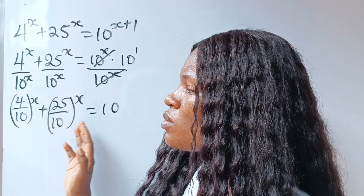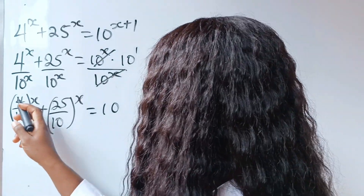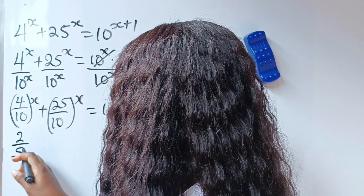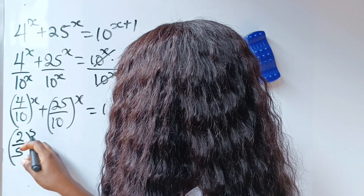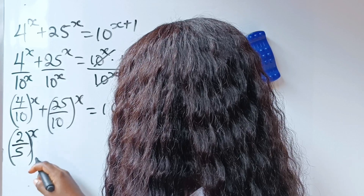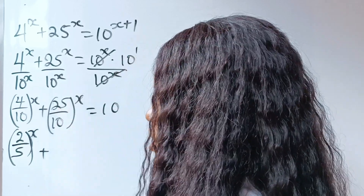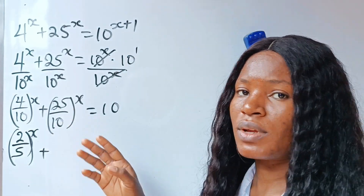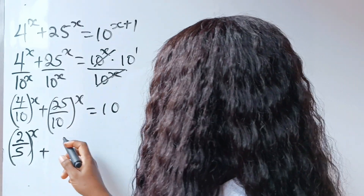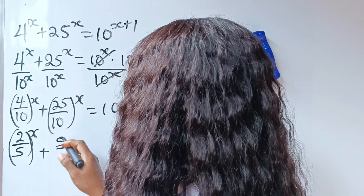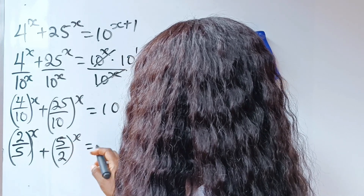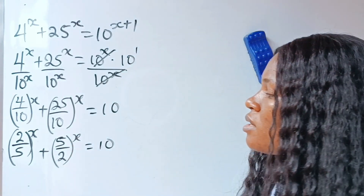Let's reduce this to its lowest terms. When 2 divides 4, we have 2; and when 2 divides 10, we have 5. So this is the same thing as 2 over 5 to the power of x. Then they have 5 in common as the common factor: 25 divided by 5 gives us 5, and 10 divided by 5 gives us 2. So raised to the power of x is equal to 10.